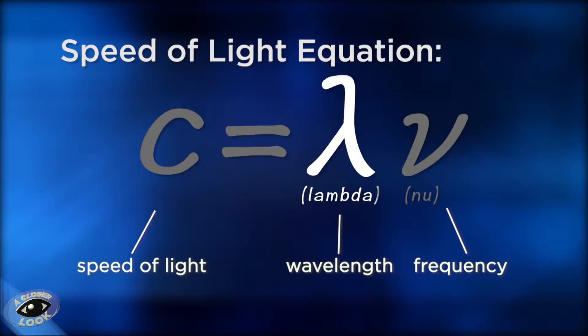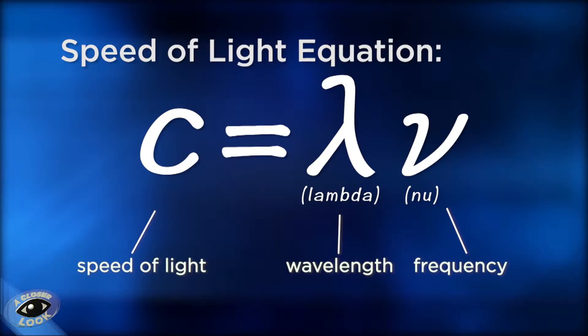Lambda stands for wavelength and nu stands for frequency. So you see that if the speed of light is constant — which it is — then if wavelength is going to increase, frequency must decrease, and vice versa.